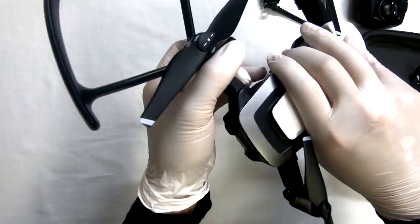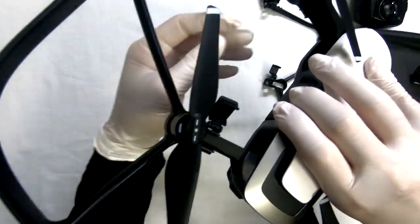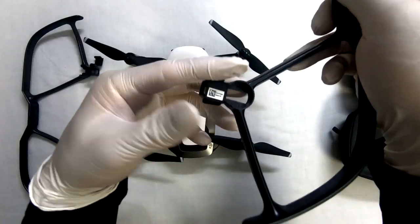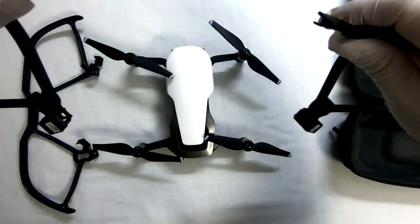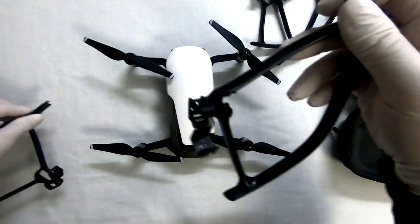And when removing the propeller guard, simply unclip them and take the pieces apart so that you can neatly store them away in your bag.